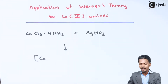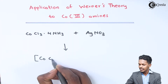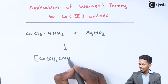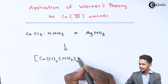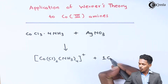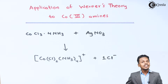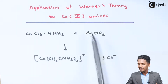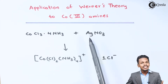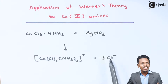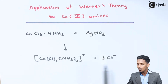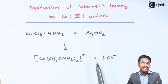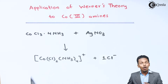The central atom is cobalt. There are two Cl atoms and four NH₃ groups. When treated with AgNO₃, we get one mole of Cl⁻. This means the silver ion reacts with the Cl⁻ ion to form a precipitate, and we get two ions — one is a complex and the other is Cl⁻.